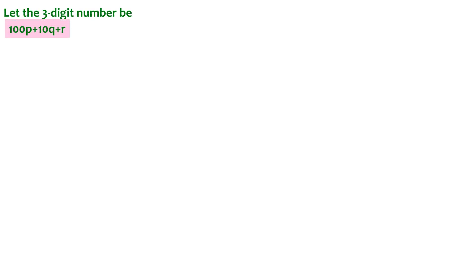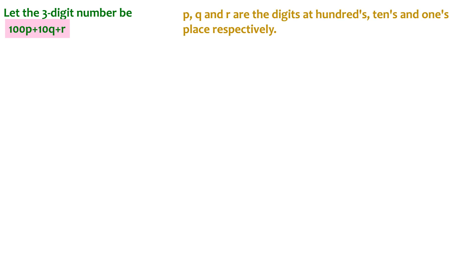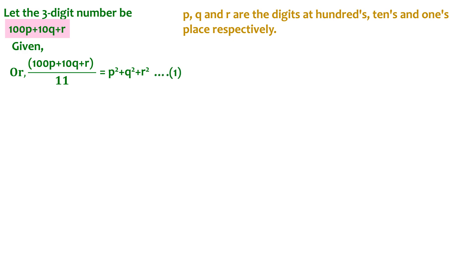The question says it's a three-digit number. We can represent a three-digit number in the form 100p + 10q + r, where p, q, and r are the digits at the hundreds, tens, and ones place respectively. The question says this three-digit number when divided by 11 is equal to the sum of the squares of its digits, which means (100p + 10q + r) / 11 = p² + q² + r². Let this be equation 1.